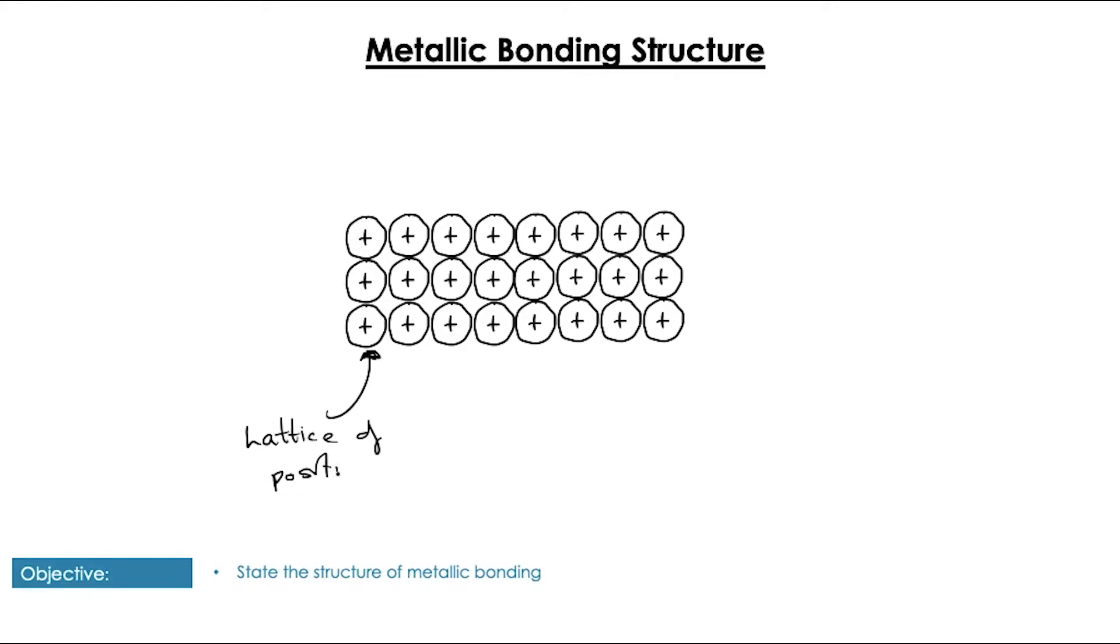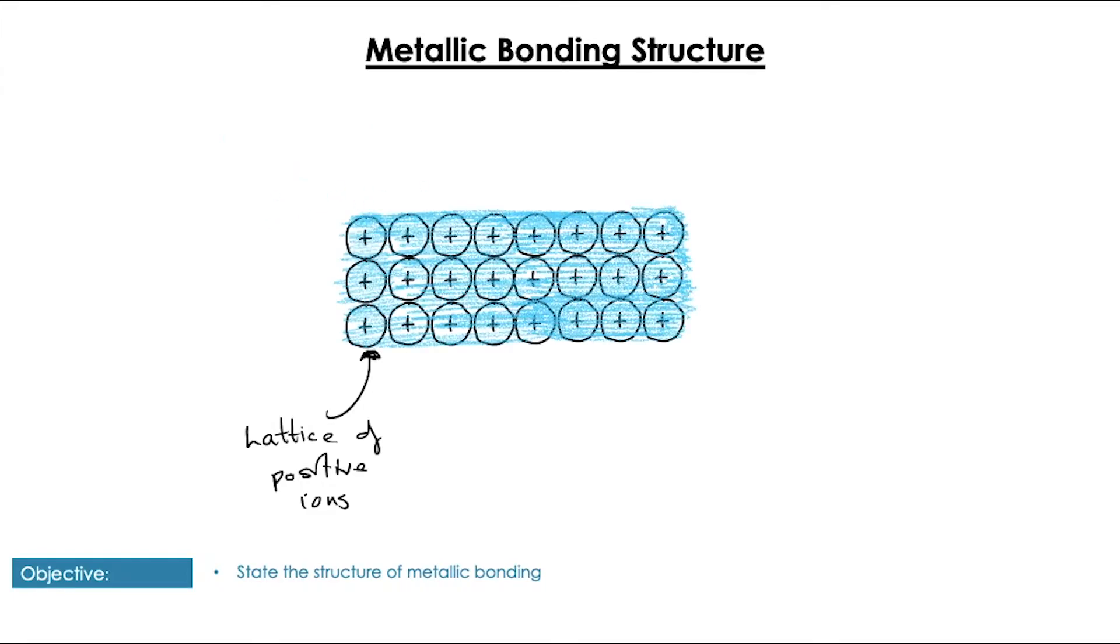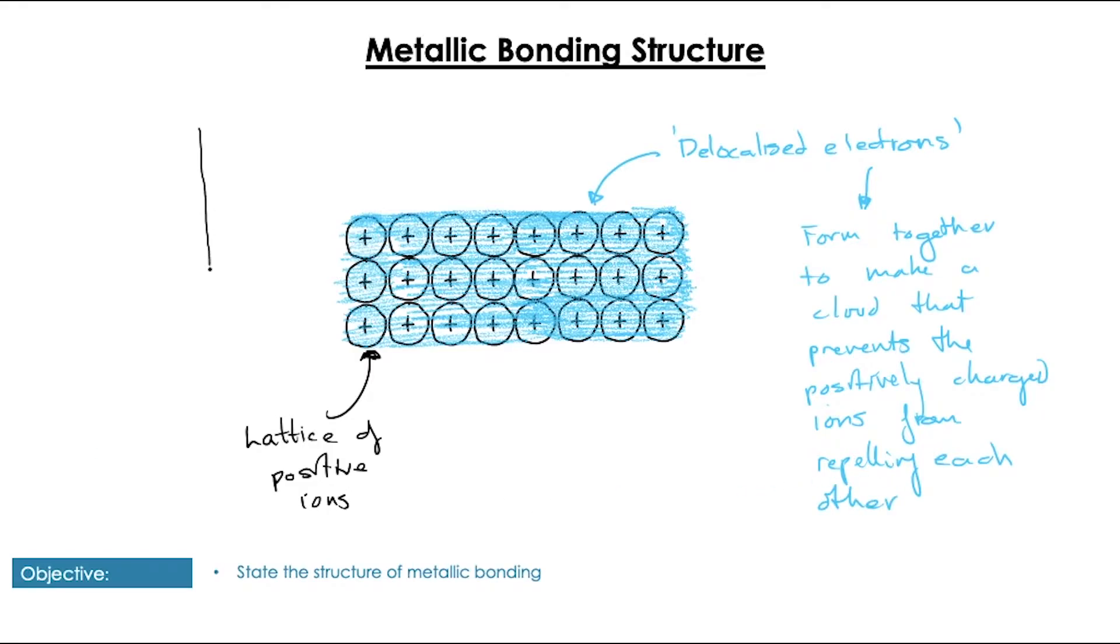Basically, we have a lattice of positively charged ions. So, these are the metal atoms that have lost their valence electrons. And those valence electrons, unlike in covalent bonds, where they operate in between two atoms, they are delocalized. So, this means that the valence electrons are given up almost for the greater good, if you like, and they form together to make a cloud that exists across the entire lattice. And that cloud prevents positively charged ions from repelling each other and allows the attraction between the positively charged ions and the negatively charged delocalized electrons. And, of course, this lattice operates in a 3D space, going backwards and forwards into the plane, as well.